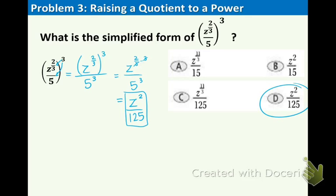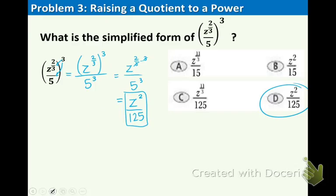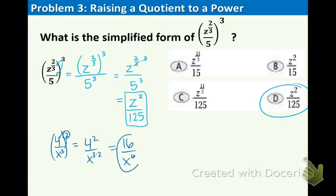One other small example, just in case you are interested. I want to show you real quickly before going on. 4 over x to the 3rd raised to the 2nd. Share the 2 with everything inside. So that means we have 4 to the 2nd over x to the 3rd times 2. And that means we have 16 over x to the 6th. And that is as far as we can go.